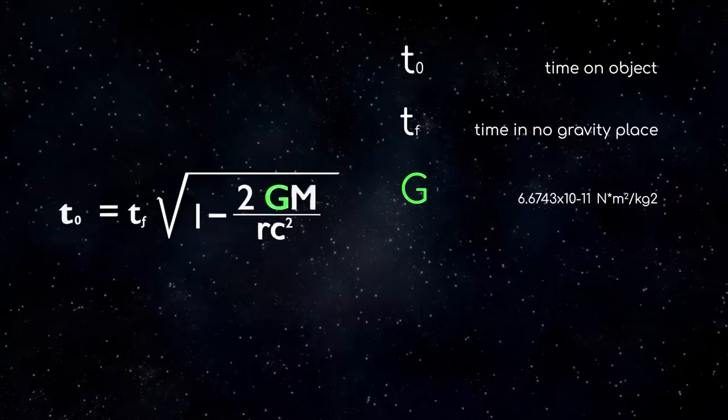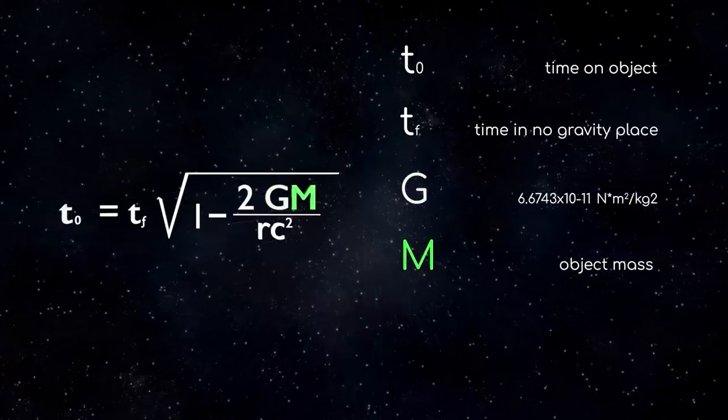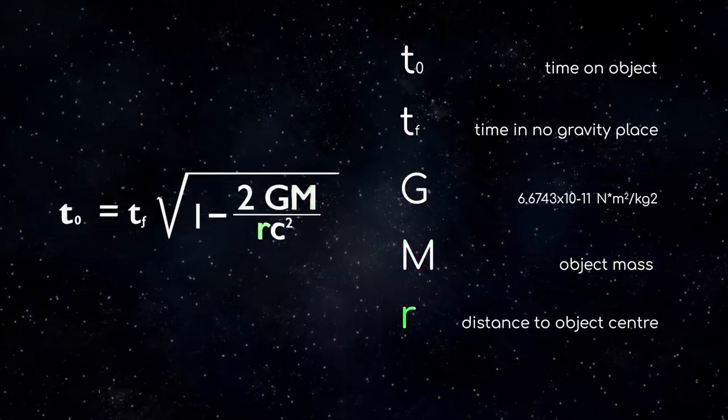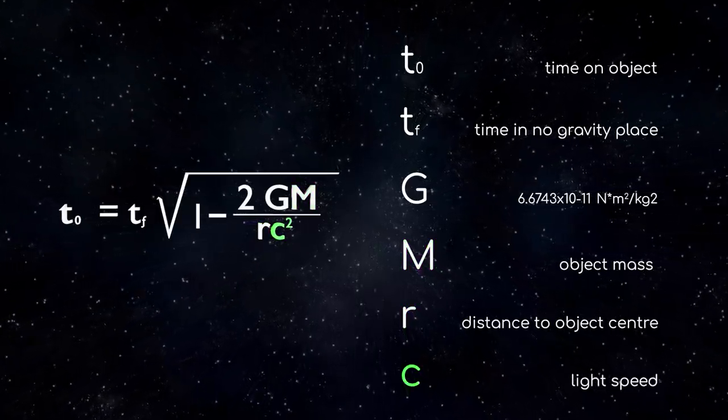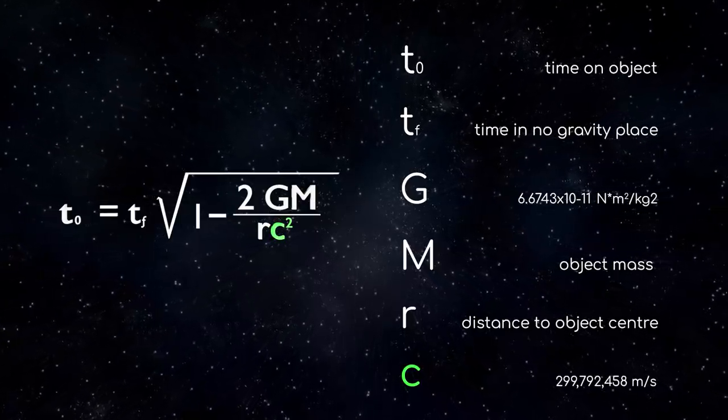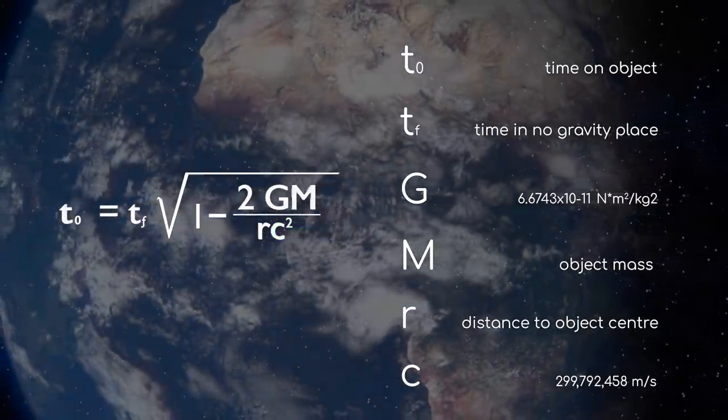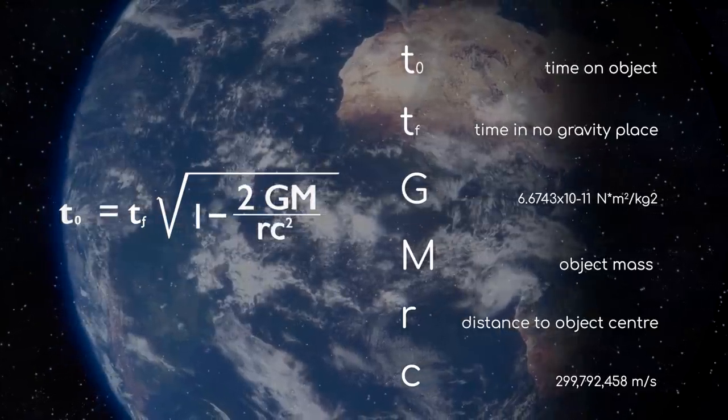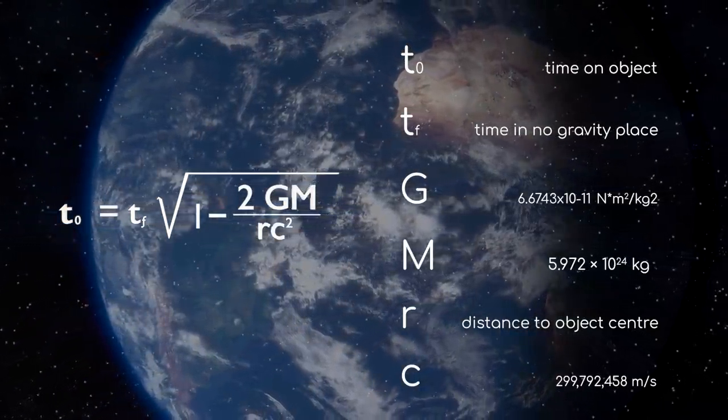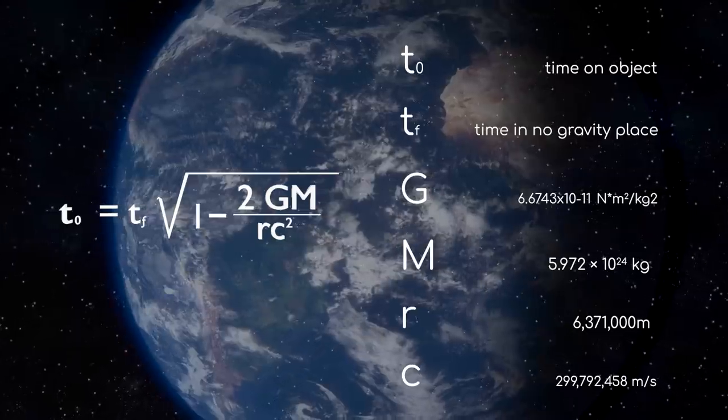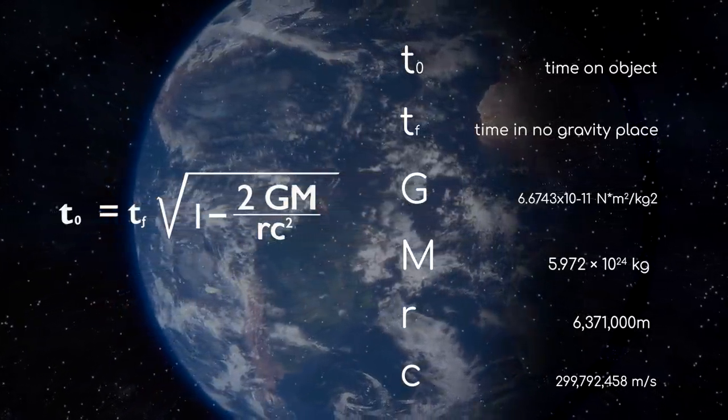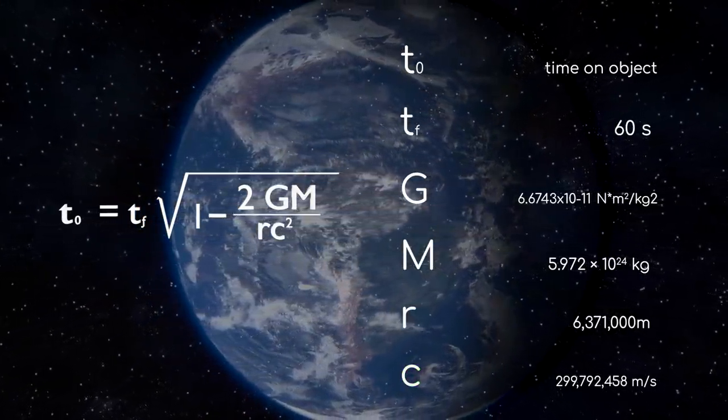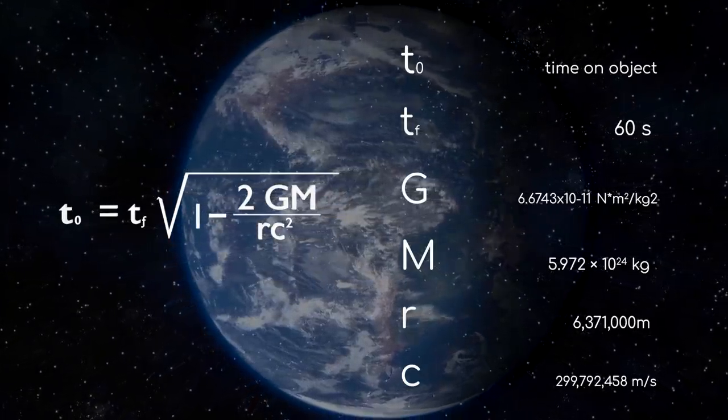And don't worry too much about that metric at the end. M is mass, specifically the mass of the object creating the gravity. R is the distance from the centre of the object. And C is the speed of light, a figure we know to be roughly 300 million metres per second. So to find out how much slower time goes on Earth compared to somewhere where there was no gravity, all we have to know is how much mass the Earth has, how far we are from its centre, and then we can decide how much time we want to compare. Just to ease ourselves in, I decided to try this formula out with 60 seconds. If 60 seconds passes in our place unaffected by gravity, how much time passes on Earth?